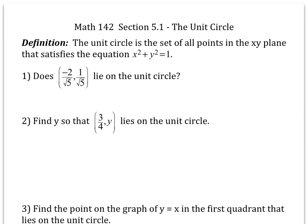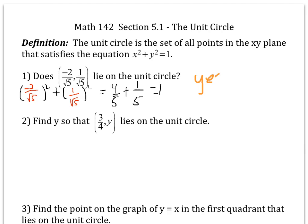In this first problem: does this point lie on the unit circle? Well, it lies on the unit circle if it makes the equation true. So let's plug the coordinates into the equation and see. When you do that, you get 4/5 + 1/5, which equals 1. So yes, that point does lie on the unit circle.